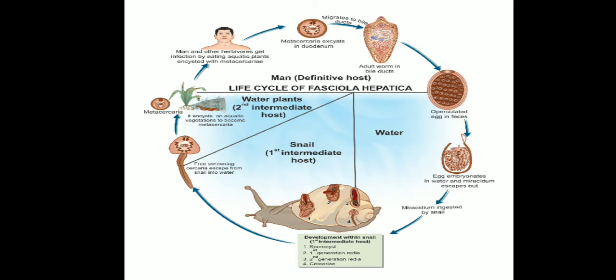The miracidium penetrates the tissues of the first intermediate host — snails of the genus Lymnaea. In the snail, the miracidium progresses through the sporocyst and first and second generation redia stages to become cercariae in about one to two months.